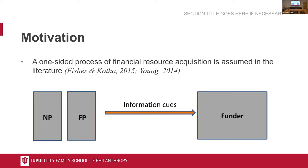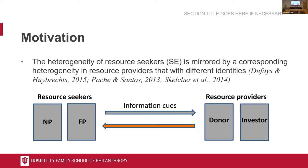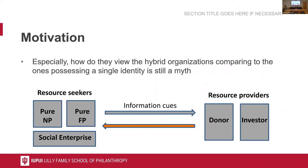The second motivation is that prior literatures have assumed that financial resource acquisition is a one-sided process — that the success of organizations' financial resource acquisition mostly depends on their own organizational capability or strategies. However, in the context of social entrepreneurship and blurring of sectors, we must notice that resource acquisition is not a one-sided process, but a more interactive process between resource seekers and resource providers. This study aims to examine the relationship between the hybridity of social enterprises and their resource acquisition outcomes, especially in relation to heterogeneous external stakeholders.